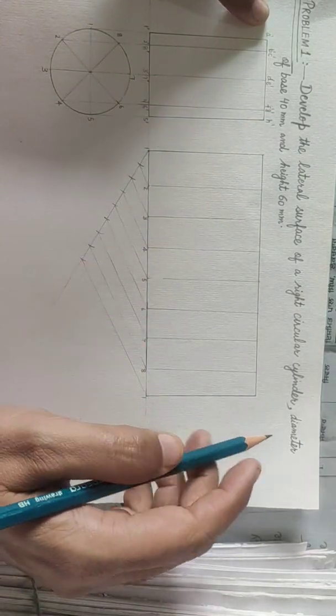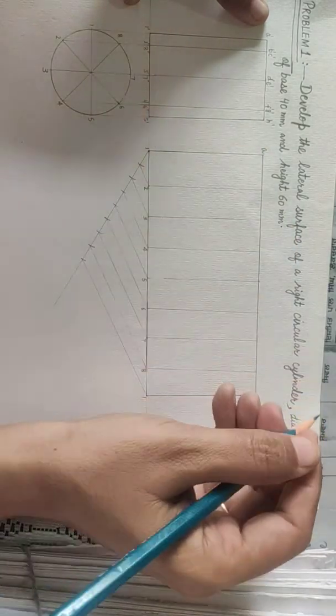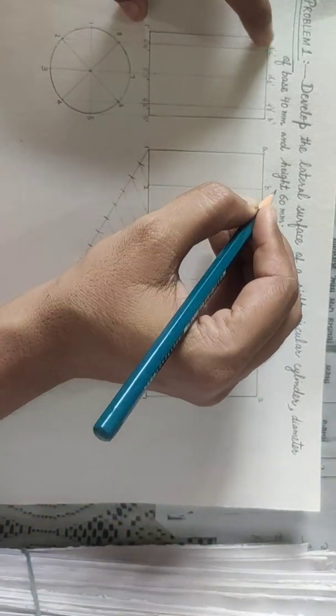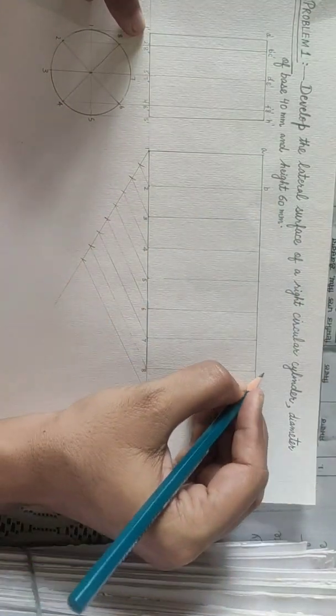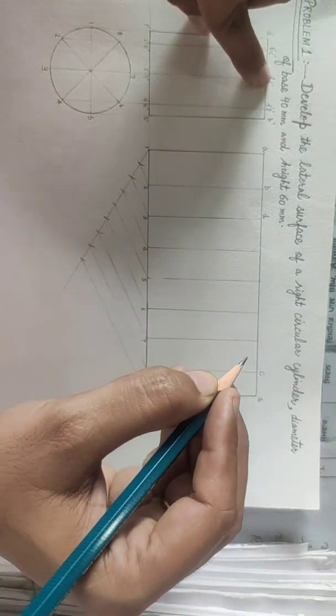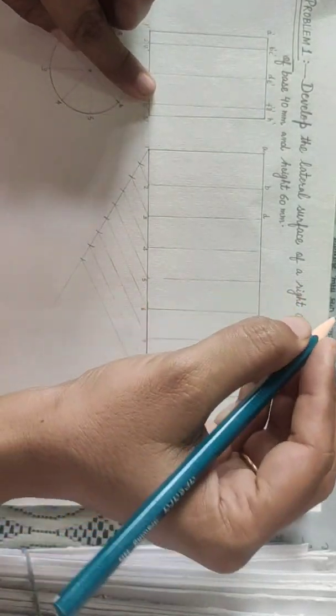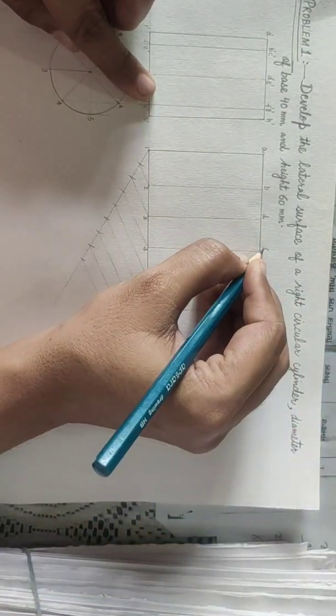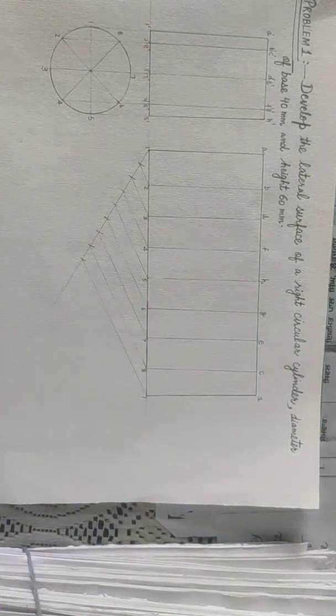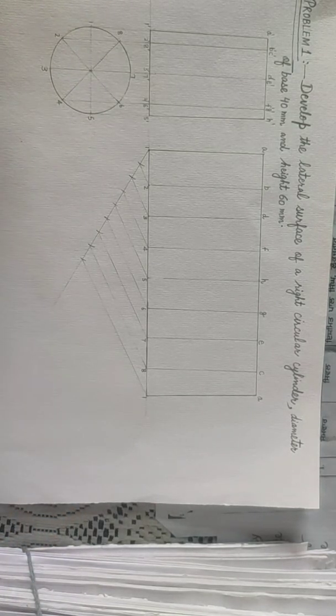So similarly we can mark these points here also. So A on the 1 projector, similarly A, B on the 2, C on the 8, D on the 3, E on the 7, then F and G on 4 and 6, F, G and H is on the 5. So in this way we can develop the surface of a right cylinder. Thank you very much.